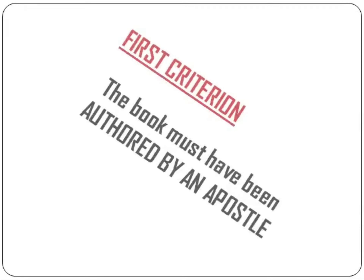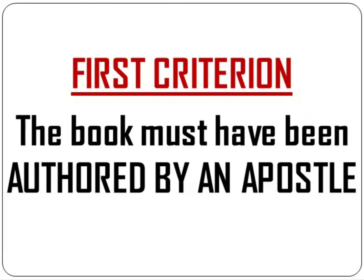The church used four criteria to select the books to be included in the New Testament. The first criterion is that the book must have been authored by an apostle. Only the immediate apostles of Jesus have the authority to speak and write for him, and this authority is non-transferable. There are nine books in the New Testament that were written by the apostles.